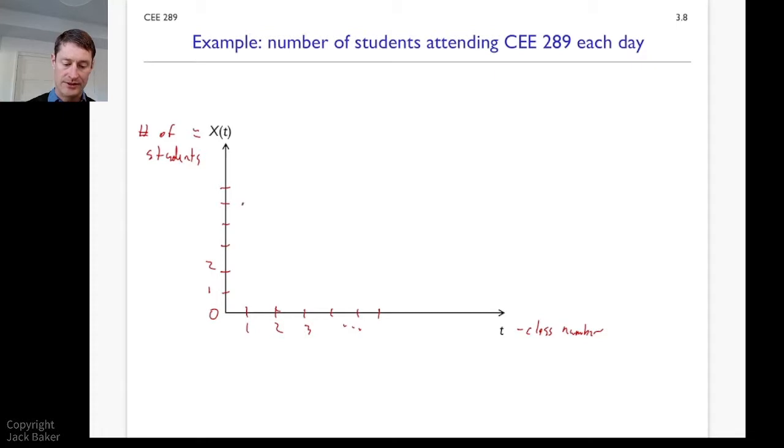And so at each class number, we're going to have a discrete number of students. And we'll have to have some sort of rule of how many students are, or how much participation counts as attending. But if you showed up, we might have some process that looks like this. And so here, now I've got a discrete parameter for the class number. And I also have a discrete X for the number of students. So that's the discrete, discrete case.